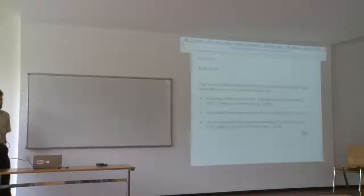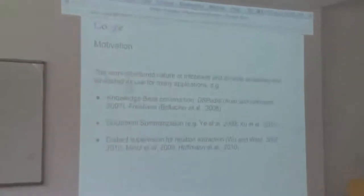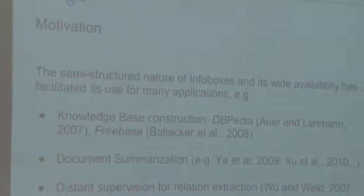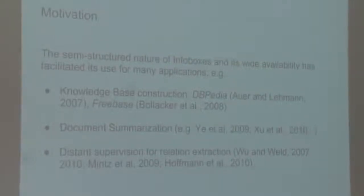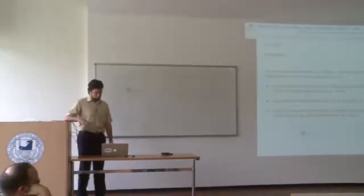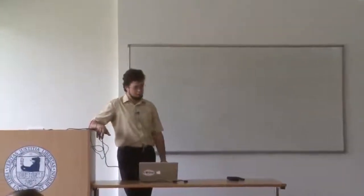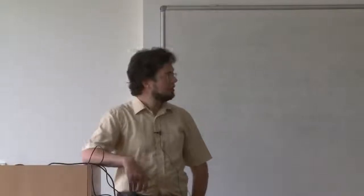Because Infoboxes are semi-structured — they don't follow a really rigid schema, but they have some common structure within the same type — we can consider them semi-structured, and they're definitely much easier to process than the main entries. They're also widely available and open access. Anyone can extract them from Wikipedia pages, which has facilitated their use for many applications, including knowledge base construction. Knowledge bases like DBpedia or Freebase take much information from Wikipedia Infoboxes.